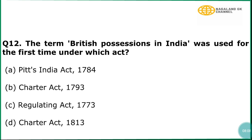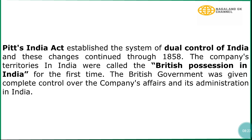Question number 12: The term 'British possessions in India' was used for the first time under which act? The correct answer is option number A, Pitt's India Act 1784. In explanation, Pitt's India Act established the system of dual control of India, and these changes continued through 1858. The company's territories in India were called the 'British possessions in India' for the first time. The British government was given complete control over the company's affairs and its administration in India.